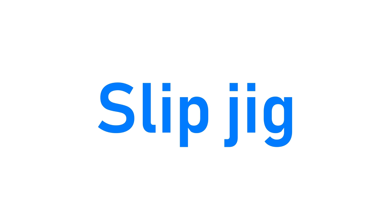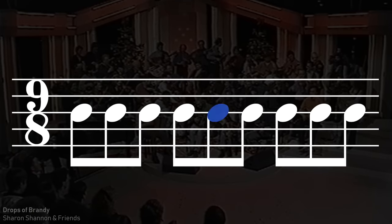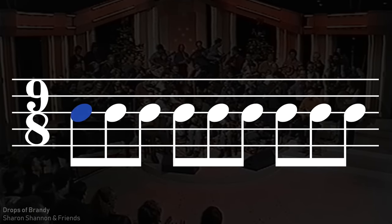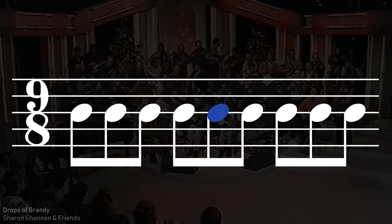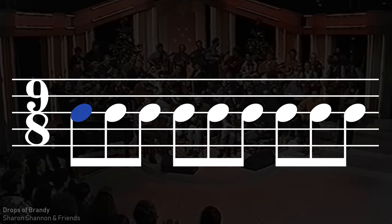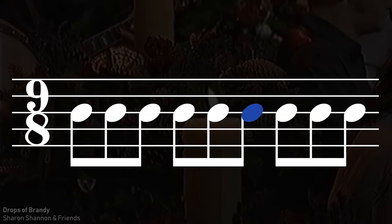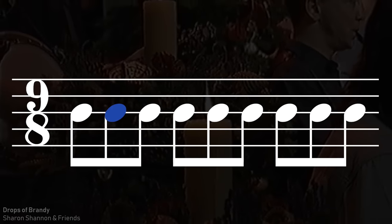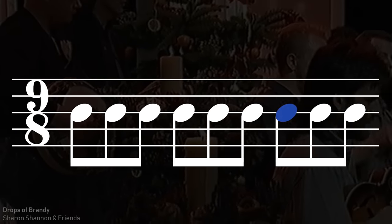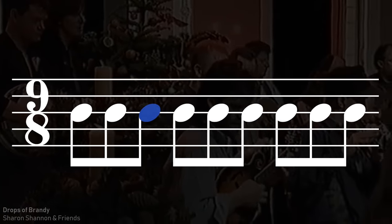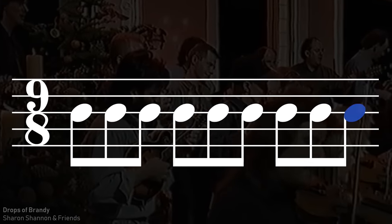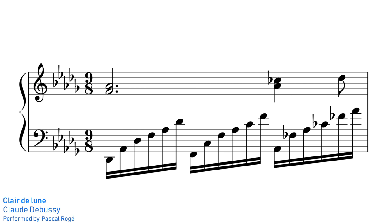Irish slip jig music is in a fast compound 9-8 meter, giving it this energetic swinging sound. Debussy's famous Clair de Lune is also written in compound 9-8 time.